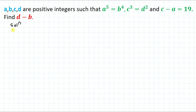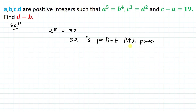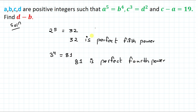Without any delay, let's start the solution. Before going through the solution, let's take an example. Suppose 2 to the power 5 equals 32, so we can say 32 is a perfect fifth power. Similarly, 3 to the power 4 equals 81, so 81 is a perfect fourth power.